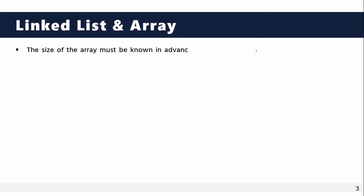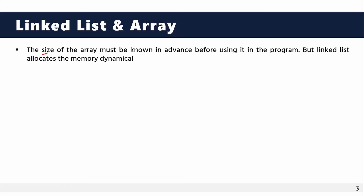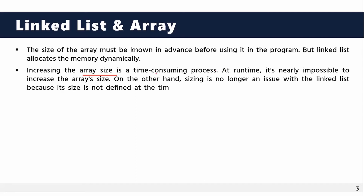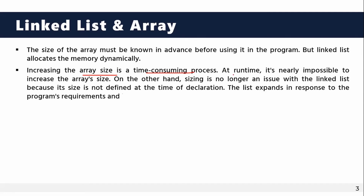The first point is size. With arrays, the size is fixed. But with a linked list, the memory size is dynamically allocated. Increasing array size at runtime is a time-consuming process and nearly impossible, while the linked list size depends on available memory in the program.